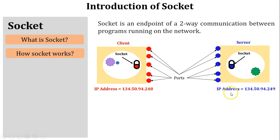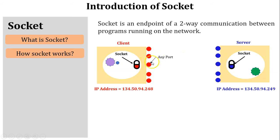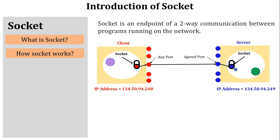The socket address is associated with the IP address and the port address. In this scenario, the client wants to send a message to the server. First, the client will choose any free port available at the client machine. At the server side, a port is reserved by that program — it is called the agreed port. Both ports are logically connected. The client program sends the message to the socket, which forwards it to the selected client port, which then forwards it to the agreed port of the server, and the socket passes the message to the program running on the server side.